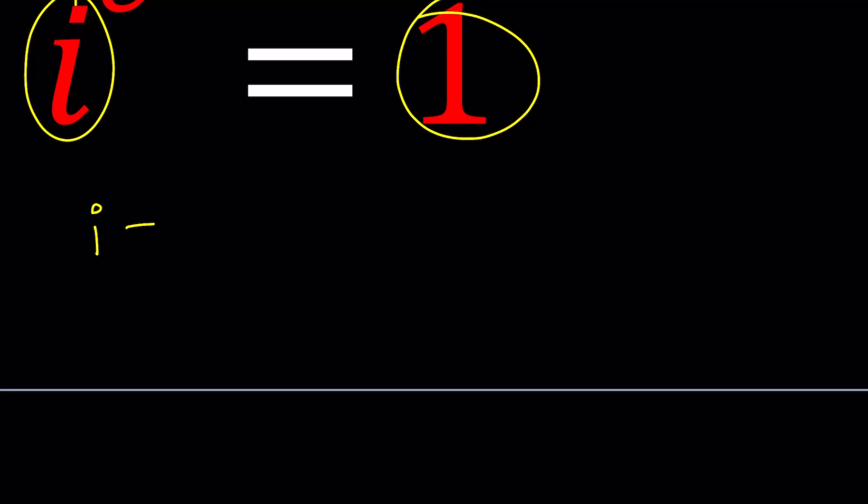So I'm going to go ahead and write i in polar form and 1 in polar form. To be able to do that, i can be written as e to the power i